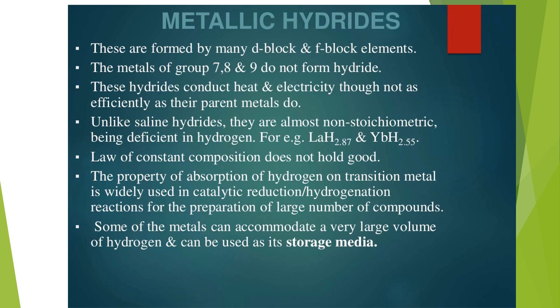Metallic hydrides: These are formed by many d-block and f-block elements. The metals of group 7, 8, and 9 do not form hydrides. These hydrides conduct heat and electricity, though not as efficiently as their parent metals do. Unlike saline hydrides, they are almost non-stoichiometric, being deficient in hydrogen. For example, lanthanum hydride LaH3 is expected, but actually its composition is LaH2.87, meaning it is deficient in hydrogen concentration. Therefore, these are non-stoichiometric in nature. Law of constant composition does not hold good. The property of absorption of hydrogen on transition metal is widely used in catalytic reduction and hydrogenation reactions for the preparation of large numbers of compounds. Some of the metals can accommodate a large volume of hydrogen and can be used as its storage medium.